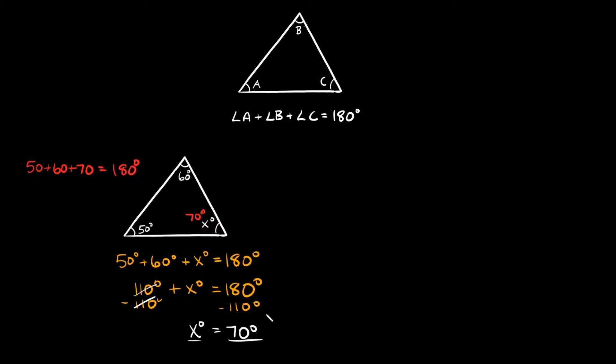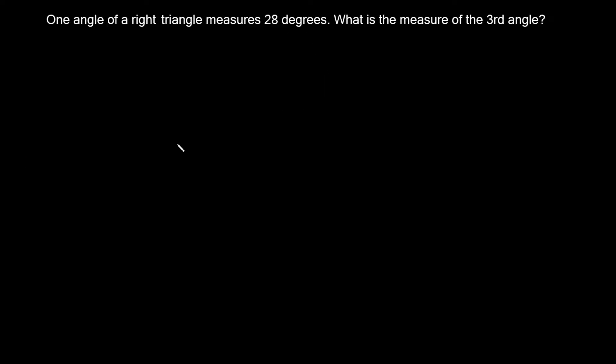Now one last problem I want to cover is a word problem with a right triangle. The problem says: one angle of a right triangle measures 28 degrees. What is the measure of the third angle? The key words here are 'right triangle.'